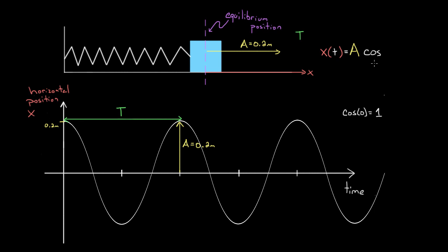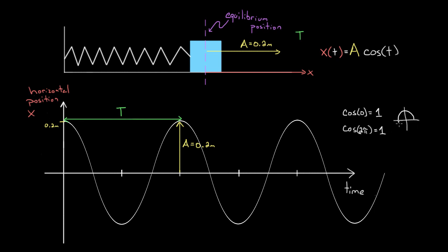There's one more piece. You can't just stick cosine of t in here. We do want this to be a function of time so we can plug in a time and get the position. But with just t inside, the function would reset every two pi seconds — at t equals zero cosine is one, and cosine returns to one when the argument reaches two pi. That means the period for cosine of t is always two pi seconds, but our period isn't necessarily two pi.